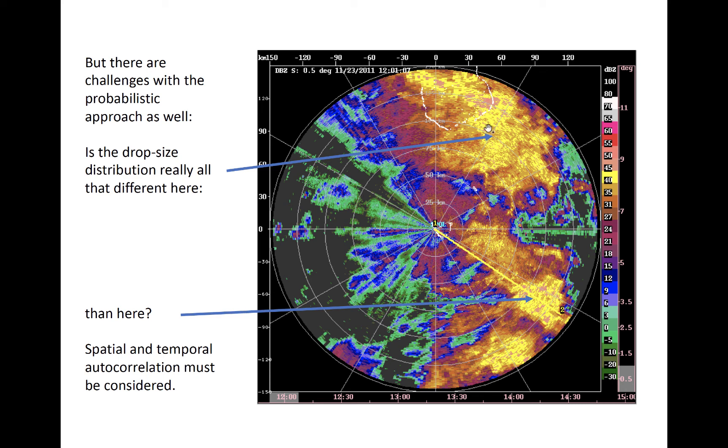So if we were to know, for some reason, what the appropriate rain rate for this reflectivity is over here, then there's a good chance that the surrounding reflectivities would come from a similar part of the distribution. Mathematically, modeling this autocorrelation in space and time is a bit challenging and still an active area of research.